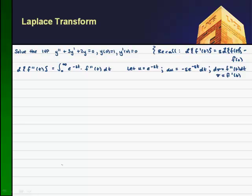We've written this as a function times the derivative of another function. So from the product rule, I'll write this as uv minus the integral of v du. So u times v will give me f prime times e to the minus st evaluated from zero to infinity, minus the integral from zero to infinity of v du. We have v is f prime, du is minus s, so we put f prime of t and du is minus s e to the minus st, with dt out here.